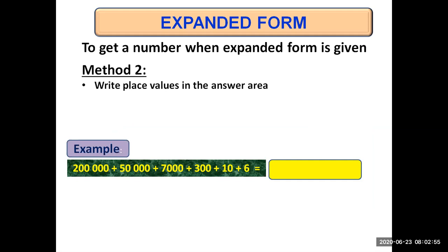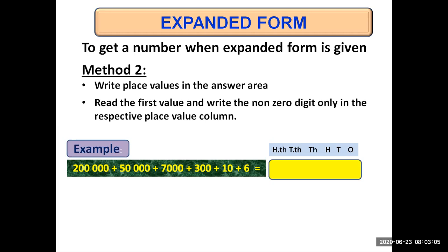First of all, write place values in the answer area — this yellow area is your answer area. We are given the example two hundred thousand plus fifty thousand plus seven thousand plus three hundred plus ten plus six — the same number we did previously. Write the place values at the top: ones, tens, hundreds, thousands, ten thousands, hundred thousands. Then read the first value in the expanded form. What is the first value? Two hundred thousand. What is the non-zero digit in it? Two. Write that non-zero digit only in the respective place value column: in the hundred thousands column write two.